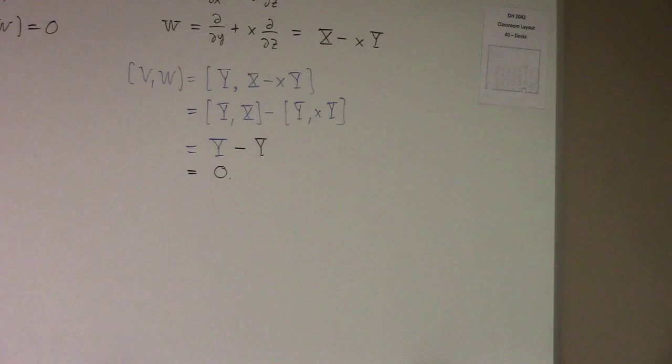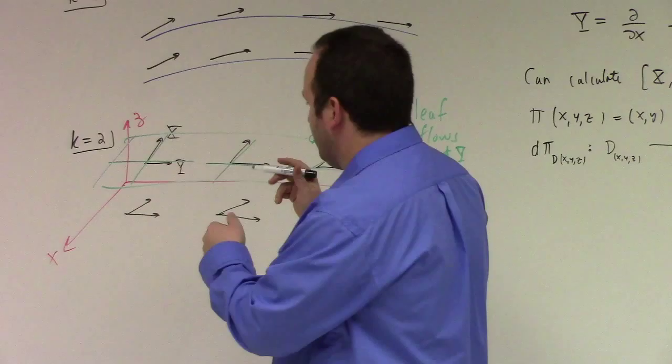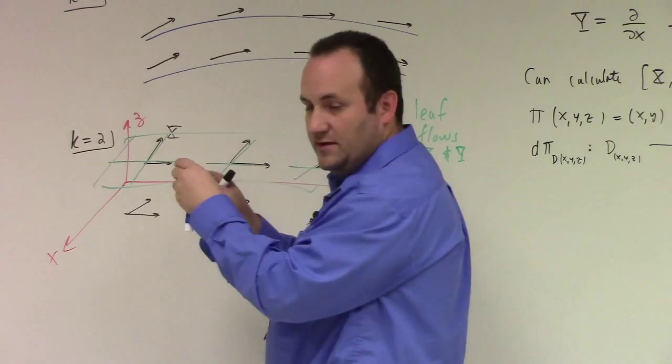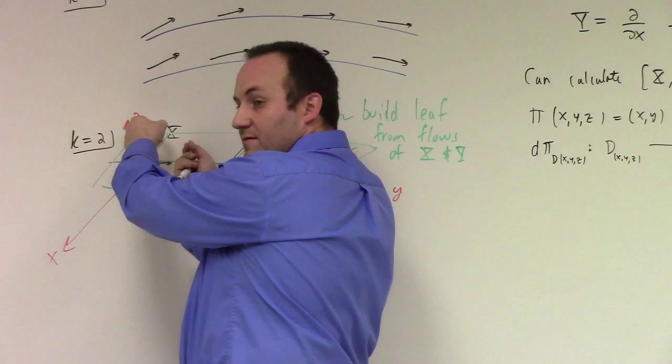The idea then is to use the flows. When commutator is zero, flowing along one vector field and then the other gives the same result regardless of order — those two different flow patterns converge to a single point. So we find integral curves of V and W. For V: ẋ = 1, ẏ = 0, ż = y, giving the flow γ_t(x,y,z) = (x+t, y, z+ty).